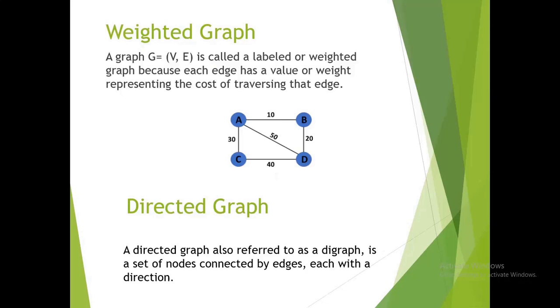Weighted graph: a graph G = (V, E) is called a labeled or weighted graph because each edge has a value or weight representing the cost of traversing that edge.